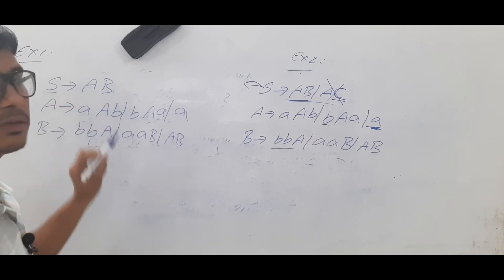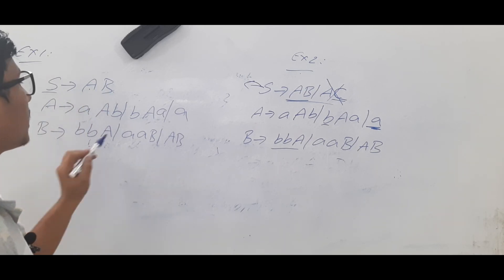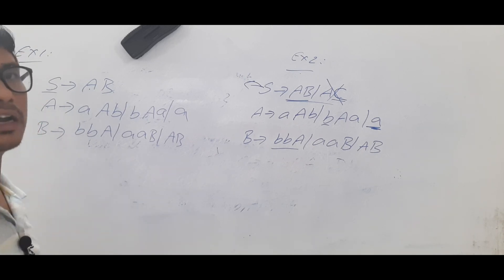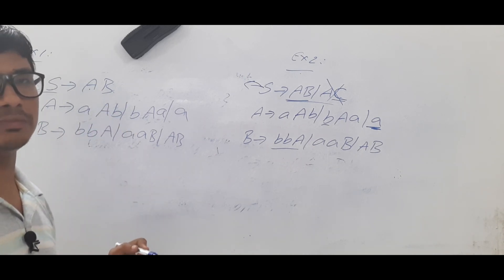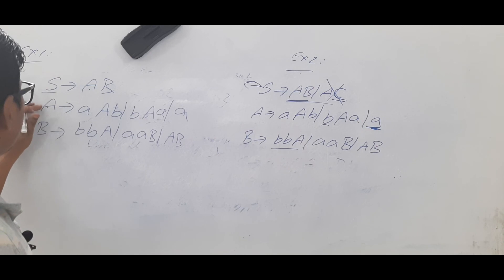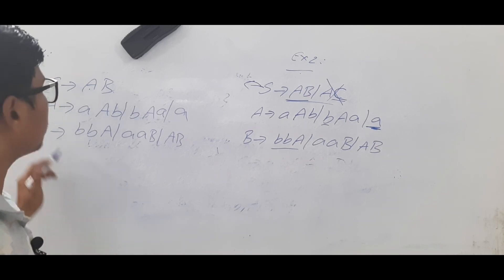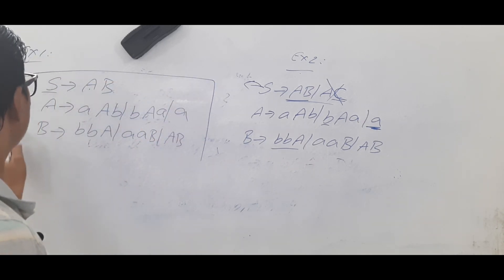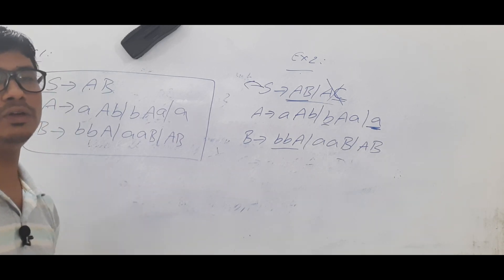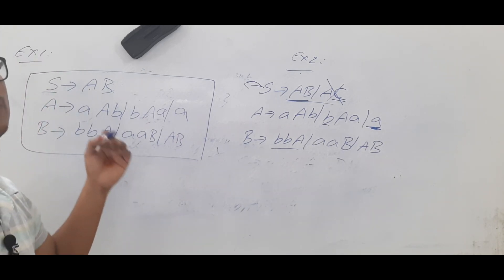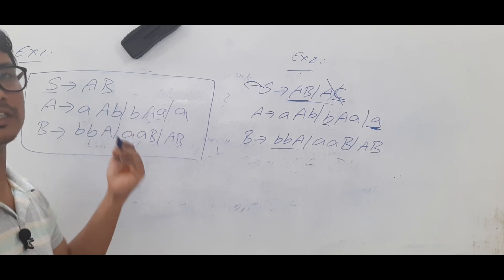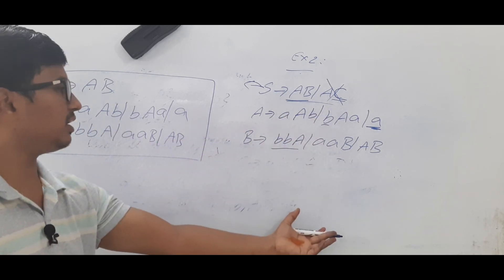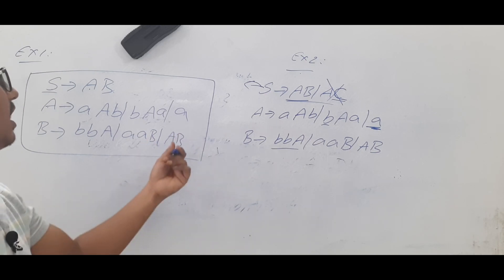For phase two, taking the start symbol S: from S we can reach variable A and variable B — both are reachable from the start symbol. So we keep all productions related to A and B. After phase two the grammar remains the same as after phase one — there are no unreachable productions in this grammar.